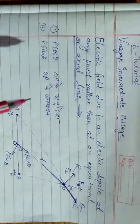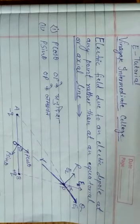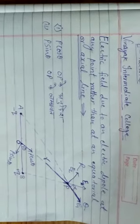Means, किसी भी बिन्दु पर किसी वैद्युत द्विध्रुव के कारण वैद्युत क्षेत्र की तीव्रता — जबकि यह बिन्दु अक्षीय और निरक्षीय स्थिति से हटकर है। क्योंकि इसके पिछले वीडियो में हम लोग अक्षीय स्थिति और उससे पहले निरक्षीय स्थिति पढ़ चुके हैं।